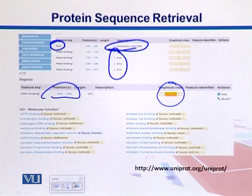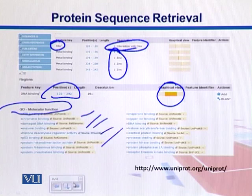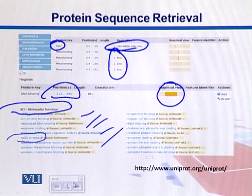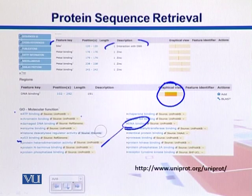Gene ontologies (GO) are different functional annotation terms that define different functions. Among them we have molecular functions, biological processes, and cellular components. Here we see molecular functions, which tells us that this protein performs functions such as ATP binding, p53 binding, and DNA binding. All those functions related to this protein are shown under the heading 'GO Molecular Functions.'